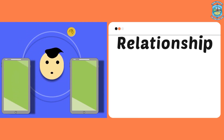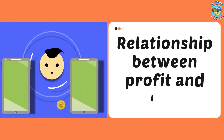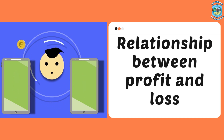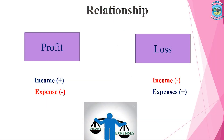Now we understand the relationship between profit and loss. Income has a positive relationship with profit — if income is increasing, profit will increase; if income is decreasing, profit will decrease. Expenses have a negative relationship with profit — if expenses are increasing, profit will decrease; if expenses are reducing, profit will increase.